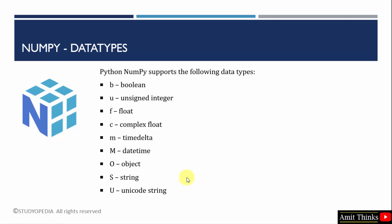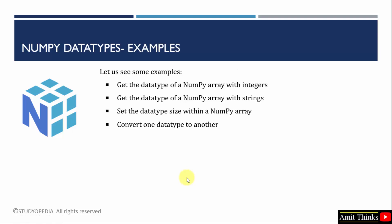In this video, we will be discussing several examples where we will create simple arrays and try to get the data type of each, so we can understand which are integer and which are string types. We will also try to set the data type size with the dtype parameter — for a string type — and we will see how we can convert one data type to another using the astype method.